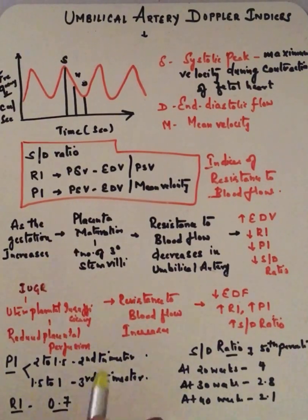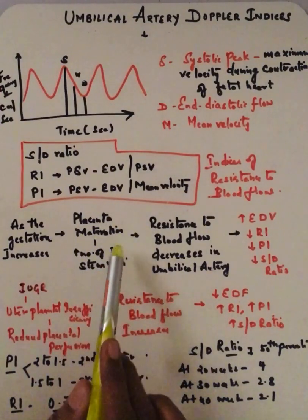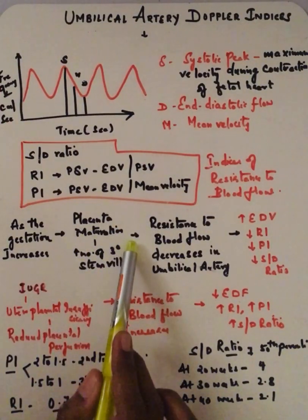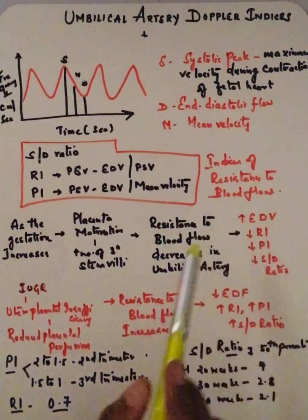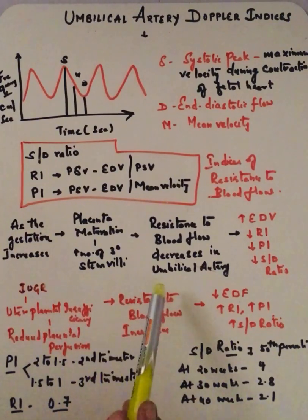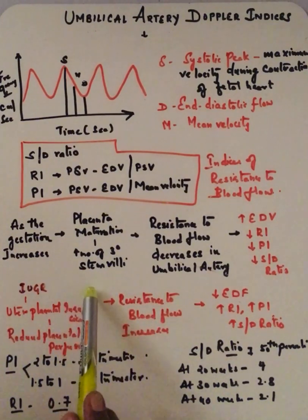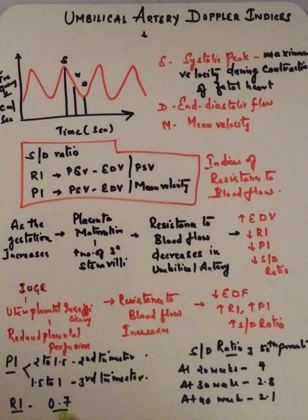One thing you have to remember is during early stages where there will not be any placental maturation—for example, till 12 weeks (first trimester)—there will be absent end-diastolic flow. Between 12 and 14 weeks, end-diastolic flow develops. And more than 14 weeks, end-diastolic flow progressively increases. Thank you.